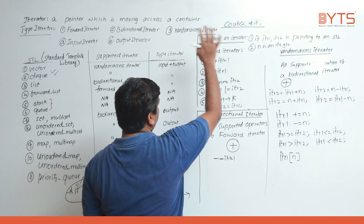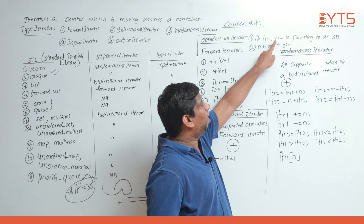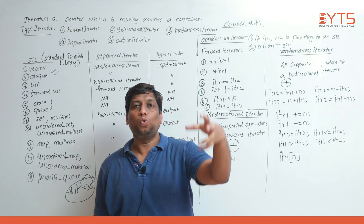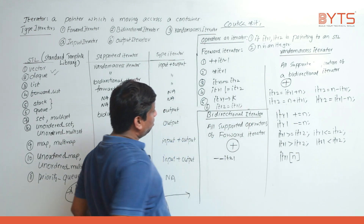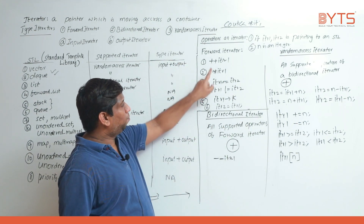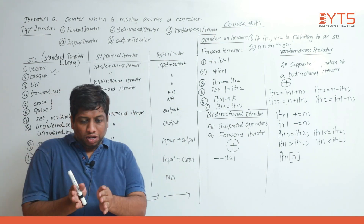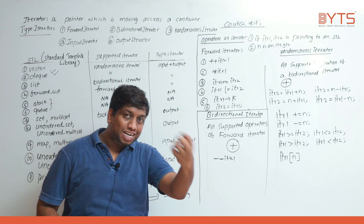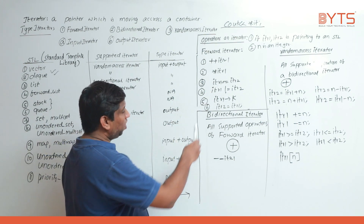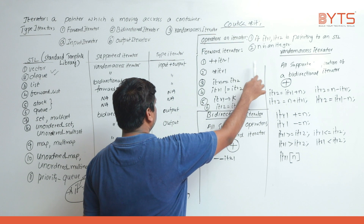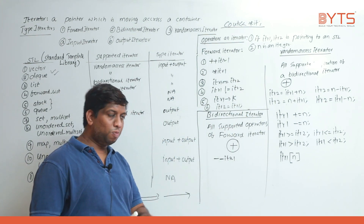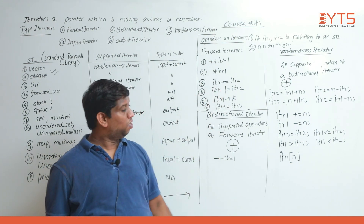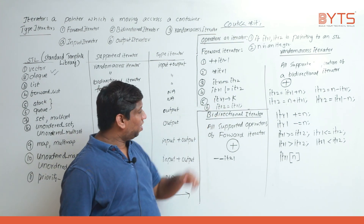Now let's look at operations on iterators. Assume itr1 and itr2 are pointing to one STL and n is an integer. For forward iterator: `++itr1` moves to the next element; `*itr` gets the value where itr is pointing; `itr1 == itr2` returns true if both point to the same object; `!=` is also supported. `itr1->key` — if itr1 is pointing to a pair, you can get the first or second element using arrow notation.